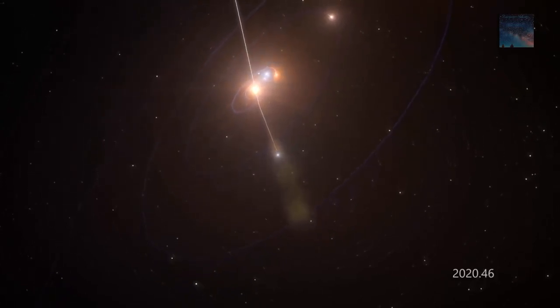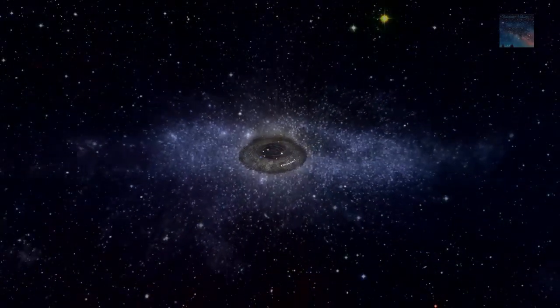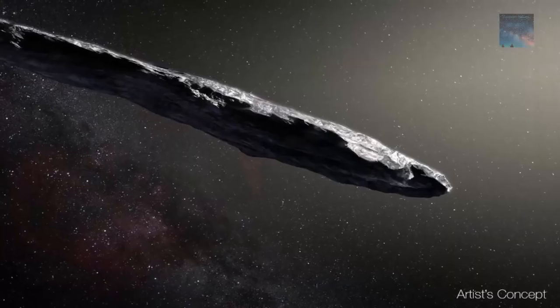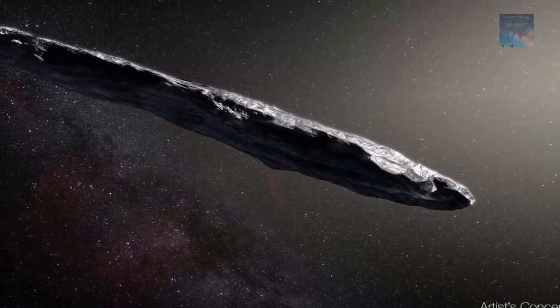We know it's not a normal asteroid because we've never seen one that's so elongated, about ten times longer than it is wide. And its speed rules out any origin within the solar system or the Oort cloud where comets come from.